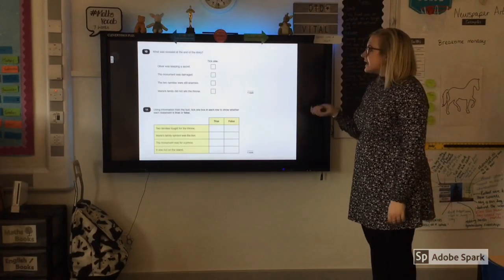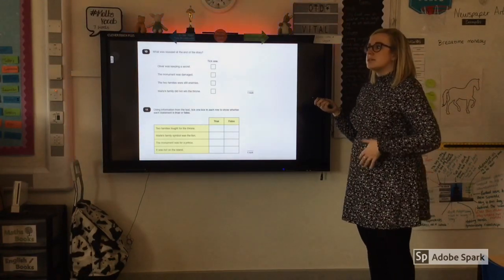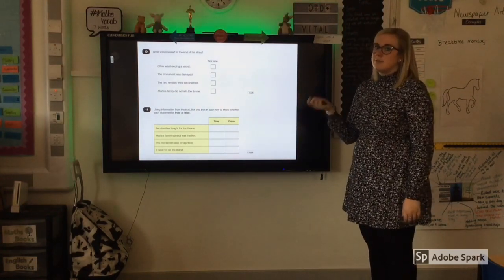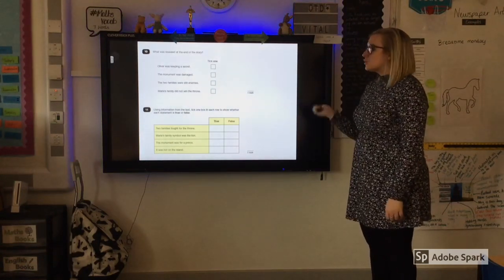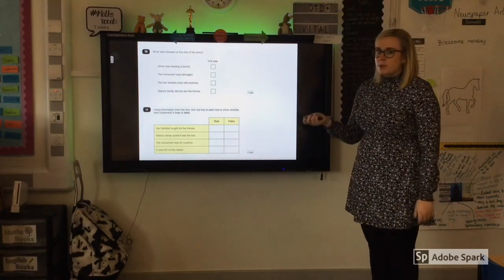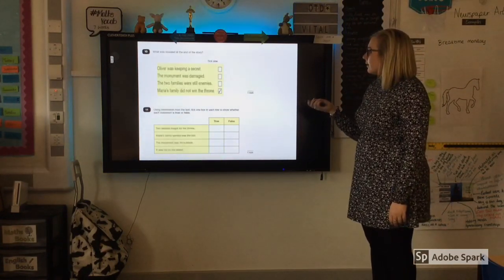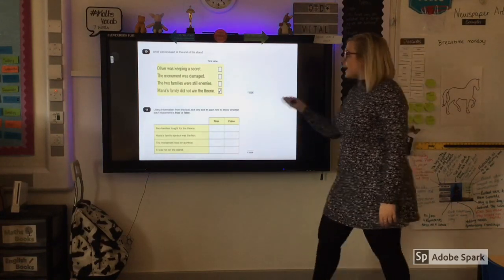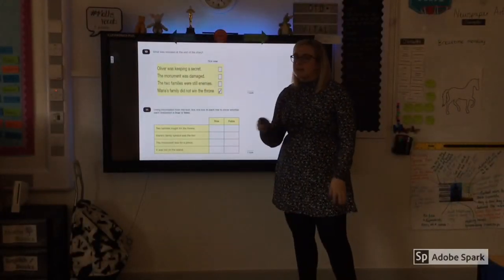Question ten. So a technique that I've told my children to use when looking at the questions where they've got important information in is to circle what is really relevant and important in that question. So for example in this question, what was revealed at the end of the story? End. So a lot of those statements that are on there might be true. However, they are not at the end of the story. So the one that is at the end of the story is Maria's family did not win the throne. So again, these might be true within the text but they are not found right at the very end of the story.